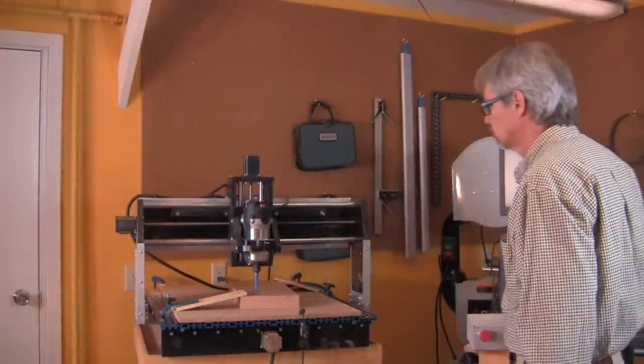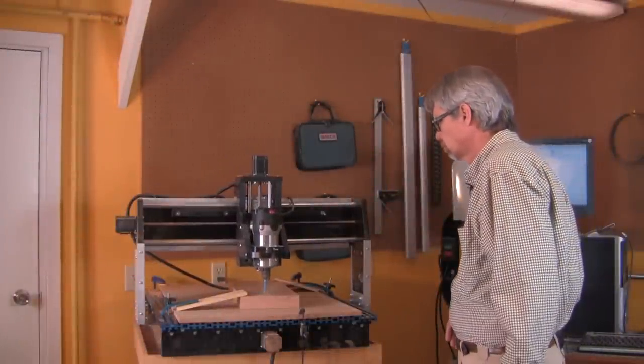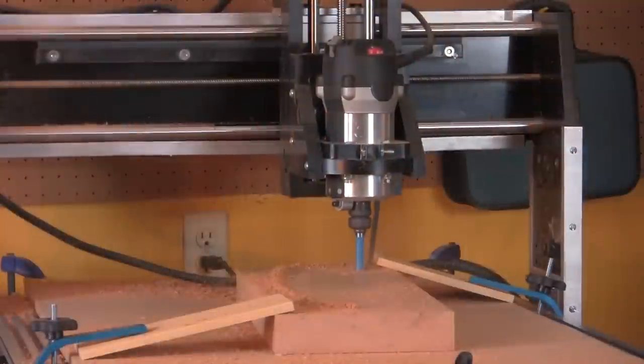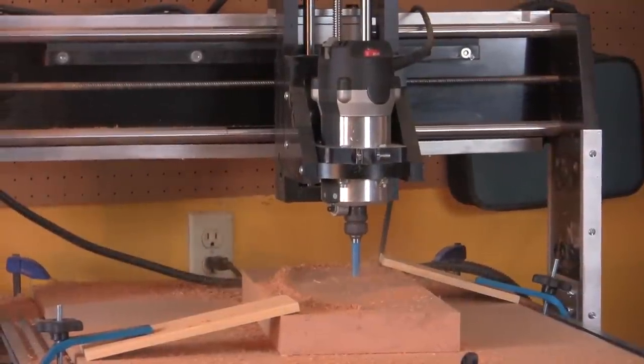After you've tested the program for cutting out the table leg, go ahead and get the process started. I used a half-inch diameter straight bit for this process.